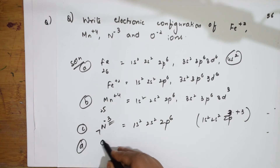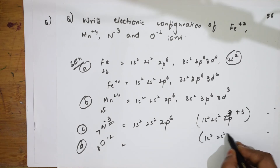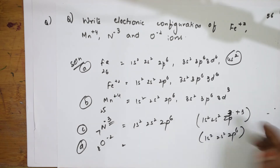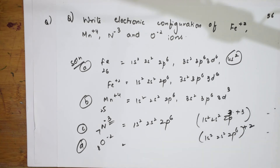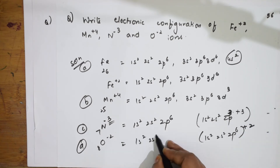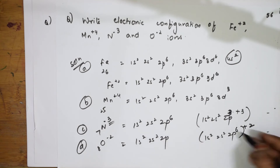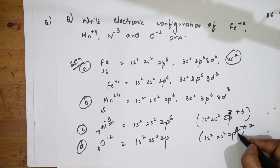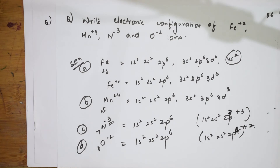For O²⁻ (Z=8): original oxygen configuration is 1s², 2s², 2p⁴. Since O²⁻ has 2 extra electrons added to the outermost shell, 2p⁴ becomes 2p⁶. Configuration of O²⁻ is 1s², 2s², 2p⁶. Remember: plus means remove electrons from the outermost shell; minus means add electrons to the outermost shell.